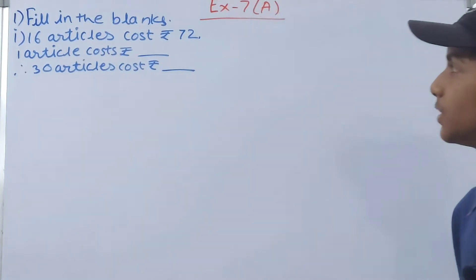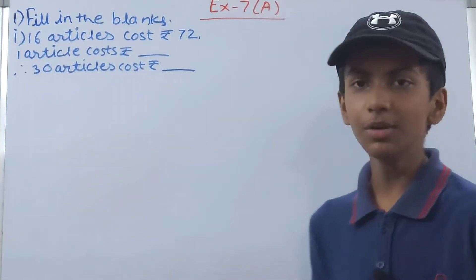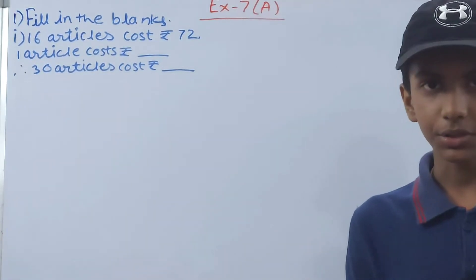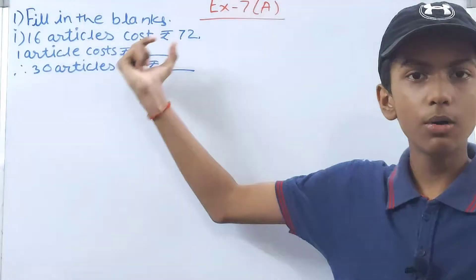We have: 16 articles cost rupees 72, so one article will cost how much. See, this question is a question of what? Direct variation. If number of articles is less, the amount also will be less.